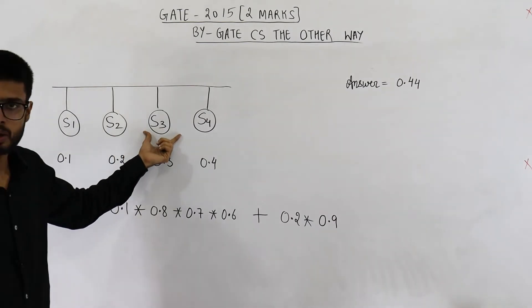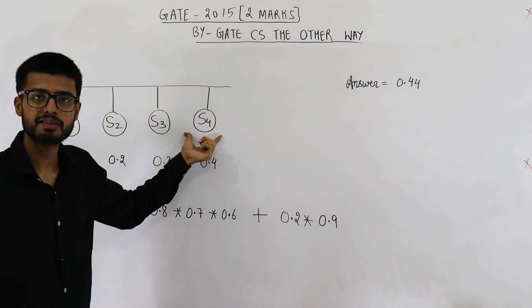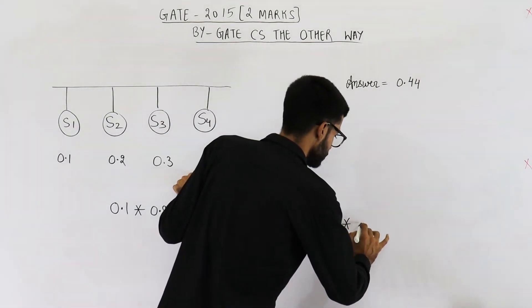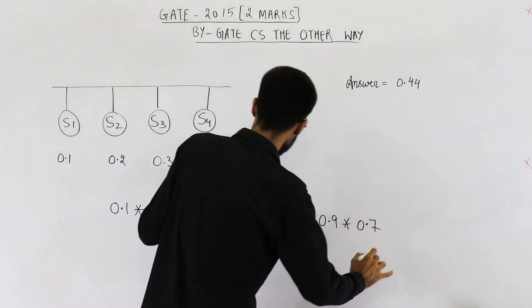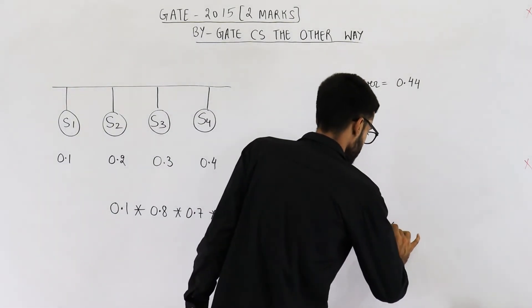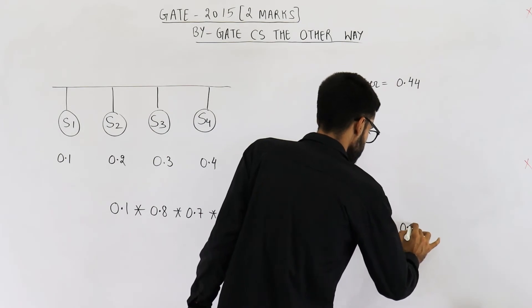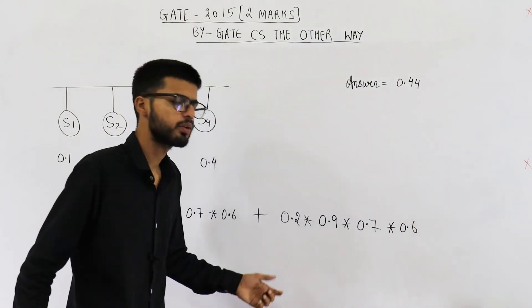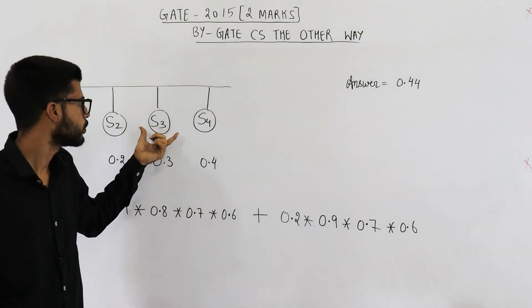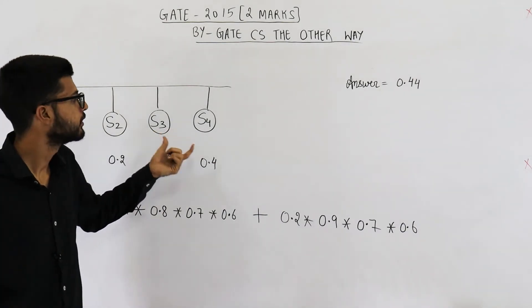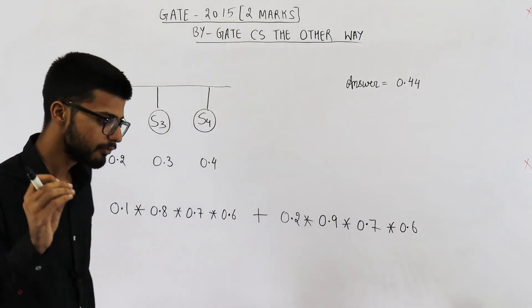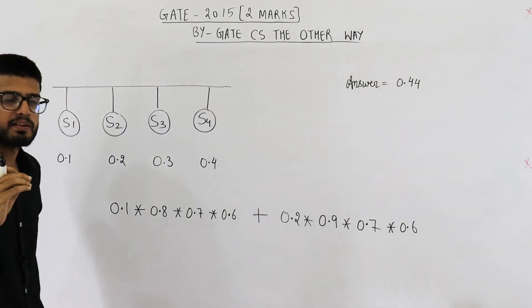Similarly, this one must not send data and this one also must not send the data. So it will be 1 minus 0.3 and this one will be 1 minus 0.4 which comes out to be 0.6. Similarly, you can just write the probabilities of other two cases, that is only S3 is sending data or only S4 is sending data and answer is this. Now please listen to my words carefully.